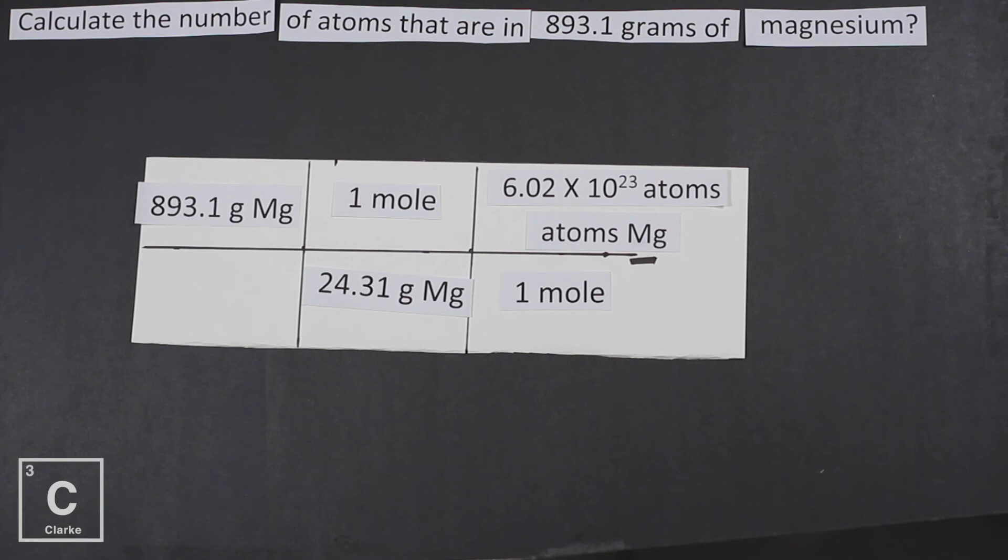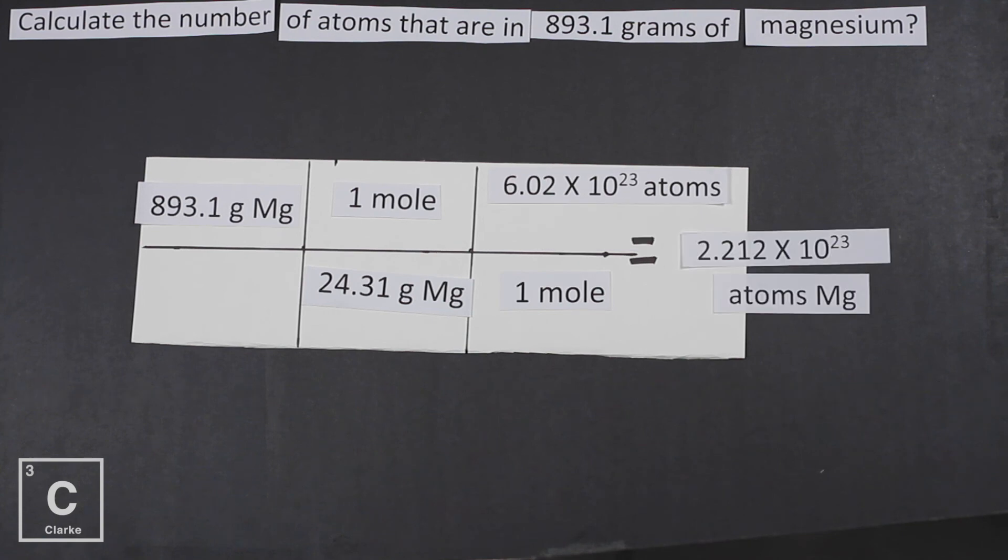Okay, so let's put this in the calculator. We're going to type in our given, 893.1 divided by 24.31 times 6.02 times 10 to the 23rd equals. We've got to go back and look at our given to see about how many sig figs. 1, 2, 3, 4. And so our answer needs four, 2.212 times 10 to the 25th. And that is atoms of magnesium.